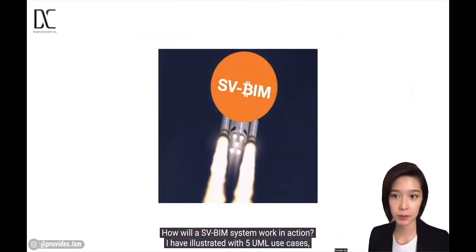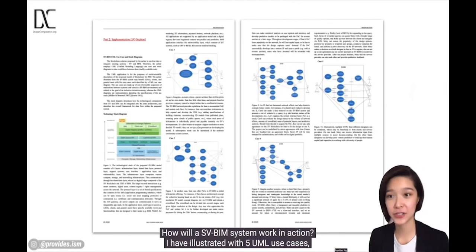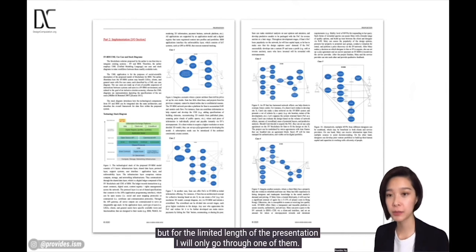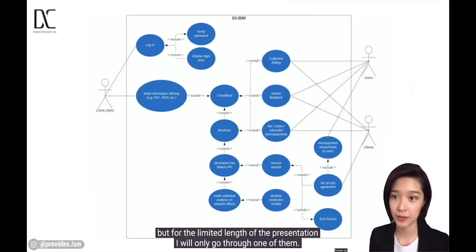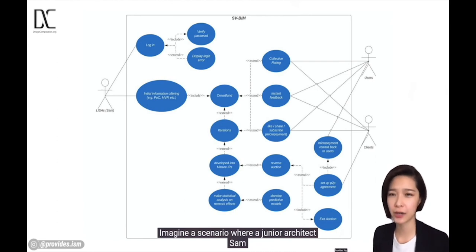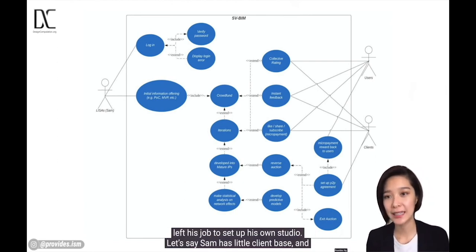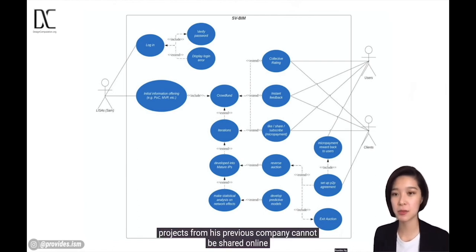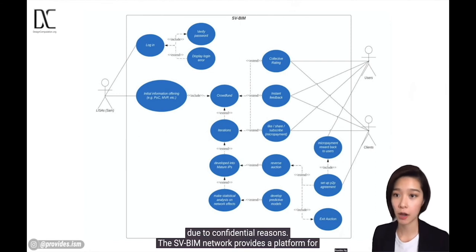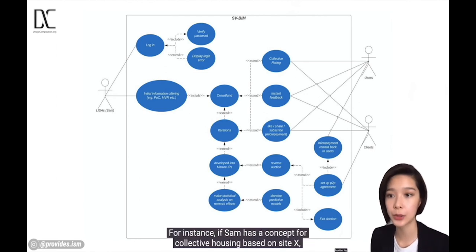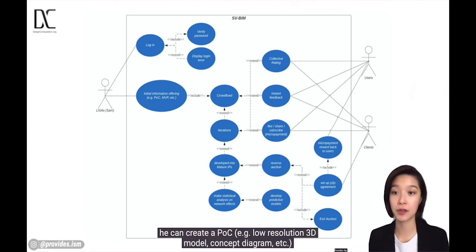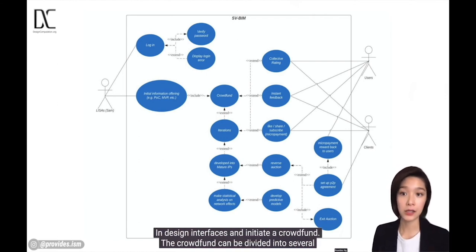How will an SVBIM system work in action? I have illustrated with five UML use cases, but for the limited length of this presentation, I will only go through one of them. Imagine a scenario where a junior architect, Sam, left his job to set up his own studio. Sam has little client base and projects from his previous company cannot be shared online due to confidentiality. The SVBIM network provides a platform for Sam to accumulate proof of work and sustain cash flow. If Sam has a concept for collective housing based on Site X, he can create a proof-of-concept like a low-resolution 3D model or concept diagram in the design interface and initiate a crowdfund, which can be divided into several stages, each giving higher resolution to the design.